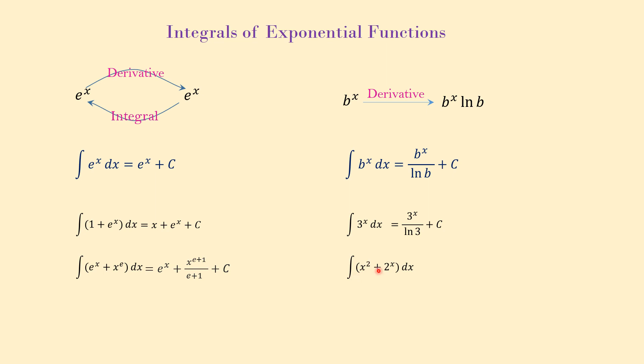Another example: integral of x to the 2 plus 2 to the x dx. To integrate x to the 2, we use power rule, and to integrate 2 to the x, we use the exponential rule that we learned here. Integral of x to the 2 will be x to the 3 over 3. We add to the power, it becomes 3 over 3 plus integral of 2 to the x is 2 to the x over ln of 2 plus c.